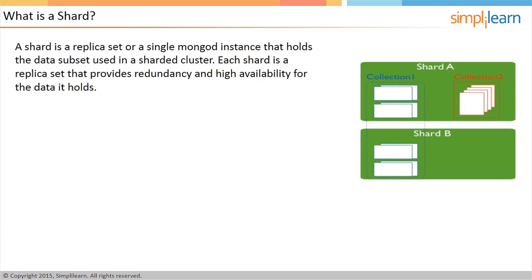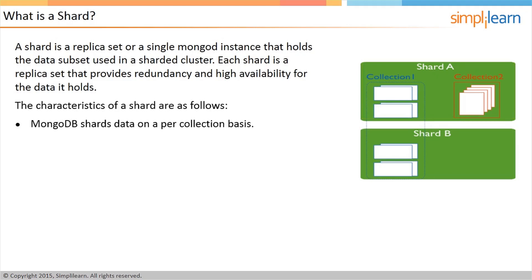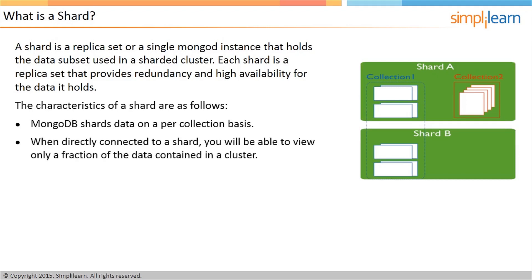A shard is a replica set or a single MongoDB instance that holds the data subset used in a sharded cluster. Shards hold the entire data set for a cluster. Each shard is a replica set that provides redundancy and high availability for the data it holds. MongoDB shards data on a per-collection basis and lets you access the sharded data through MongoS instances. If you directly connect to a shard, you will be able to view only a fraction of the data contained in a cluster.